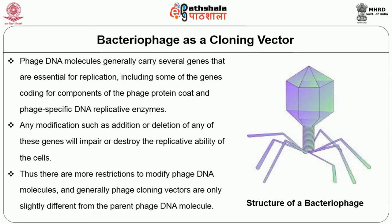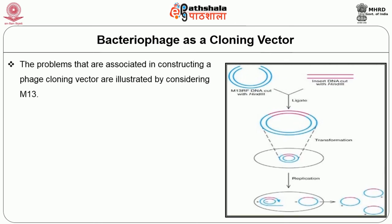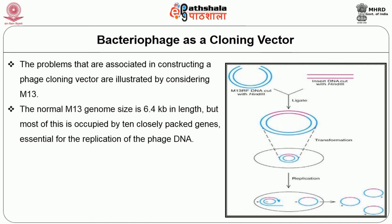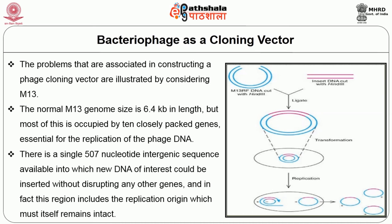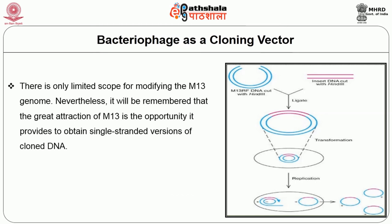Therefore, there are more restrictions to modifying phage DNA molecules, and generally phage cloning vectors are only slightly different from the parent phage DNA molecules. The problems associated with constructing a phage cloning vector are illustrated by considering the M13 phage. The normal M13 genome size is 6.4 kb, but most of this is occupied by 10 closely packed genes essential for replication of the phage DNA. There is a single 507-nucleotide intergenic sequence available into which new DNA could be inserted without disrupting any other genes, and this region includes the replication origin, which must itself remain intact.